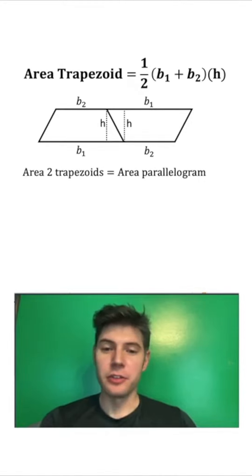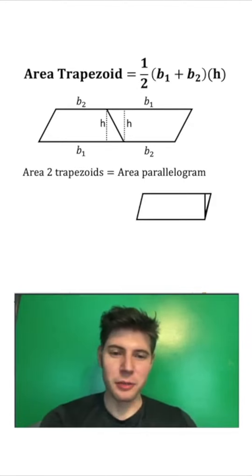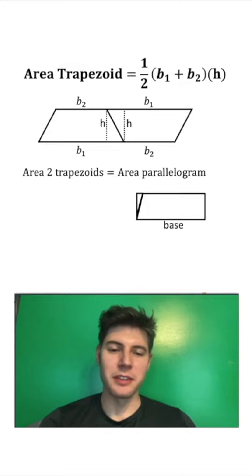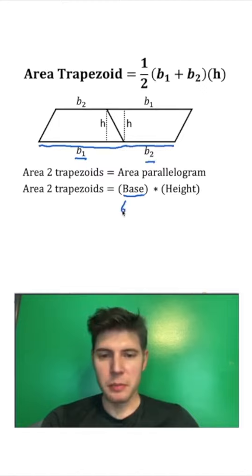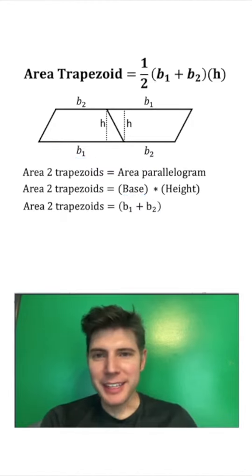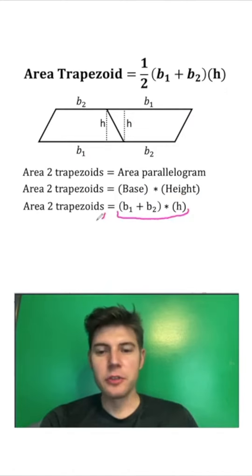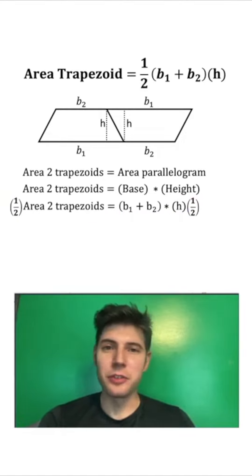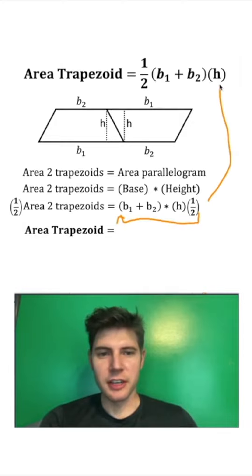We can conclude that the area of our two trapezoids equals the area of the parallelogram. If we look at a parallelogram and cut out the triangle piece and move it to the other side, the area of a parallelogram equals the area of a rectangle, which is base times height. The base is B1 plus B2, and the height is H. So this is the area of two trapezoids. To find the area of one trapezoid, we divide by one half — one half of the area of two trapezoids is the area of one trapezoid. We can rearrange this to match our formula, and now we're done.